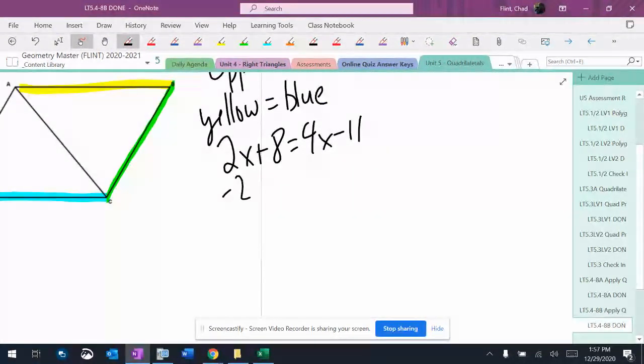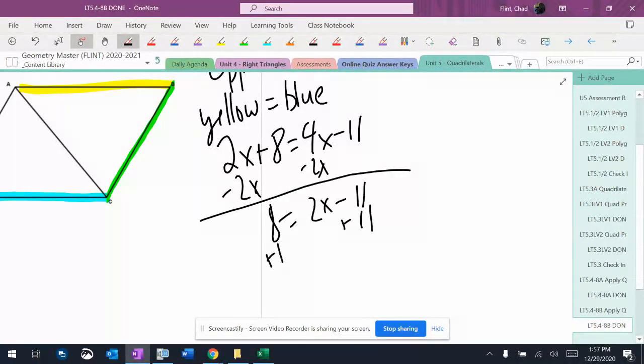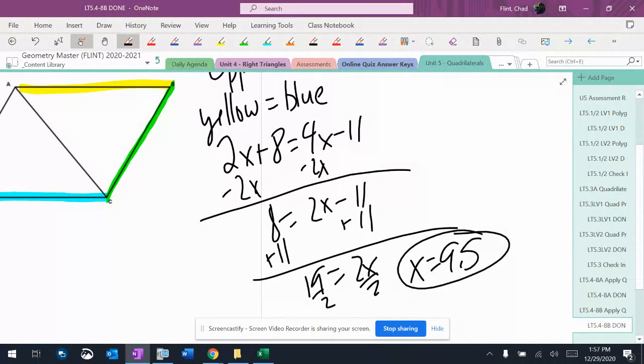And I'll solve that for x. I get 8 equals 2x minus 11, plus 11 plus 11. 19 equals 2x. And I get x equals 9.5.